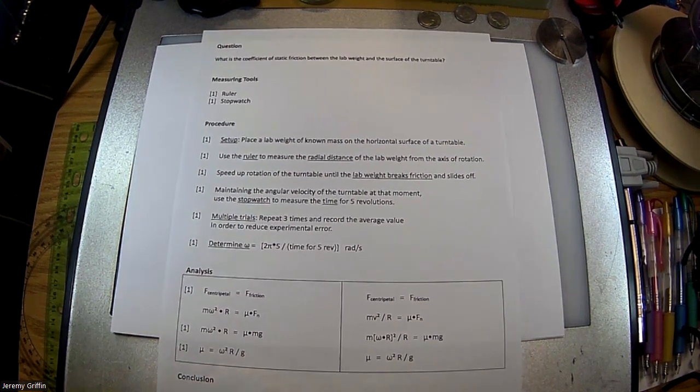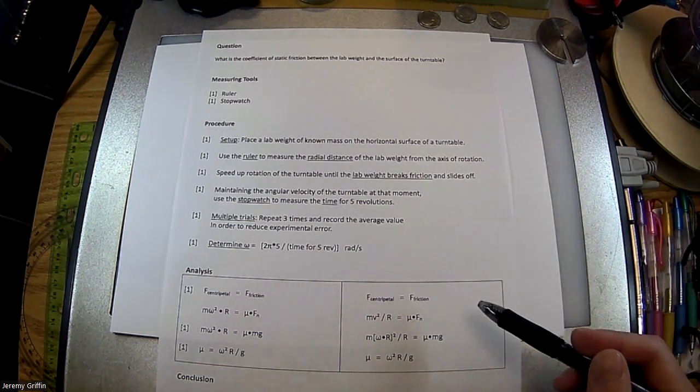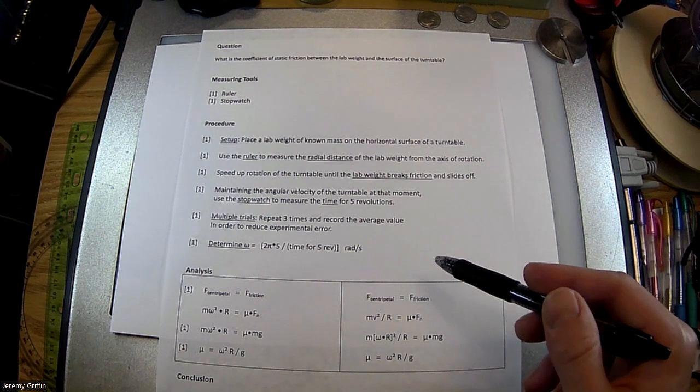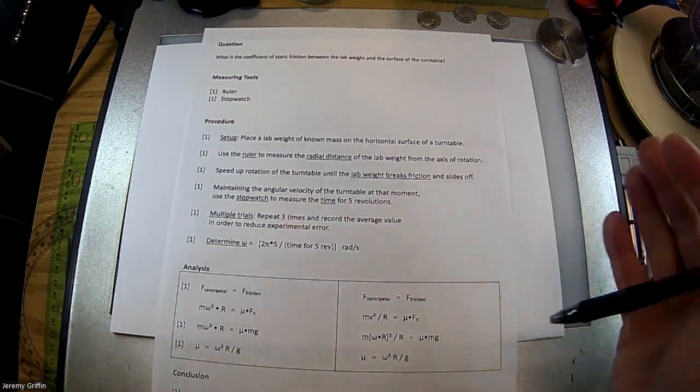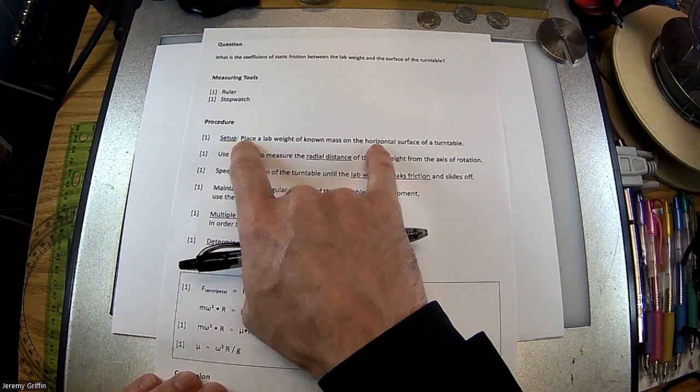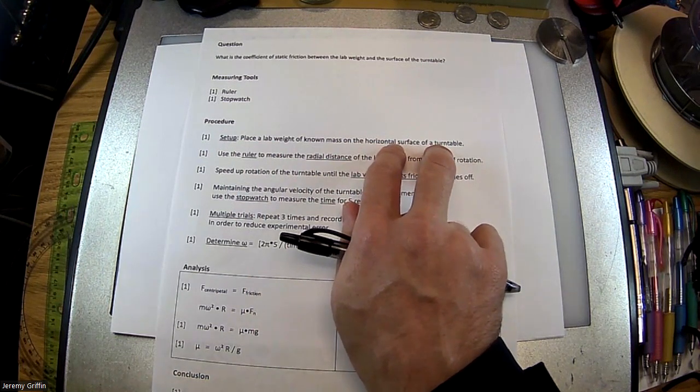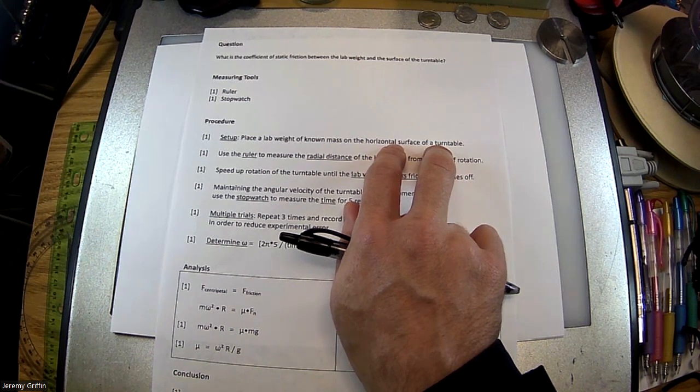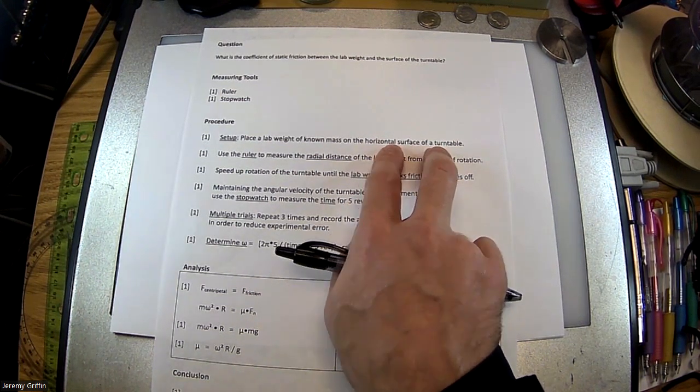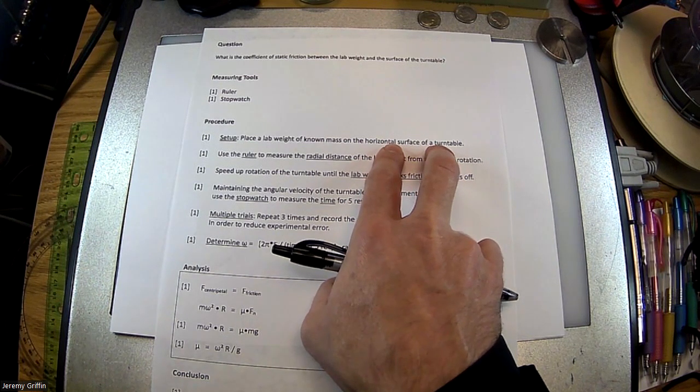All right. Procedure. So I'll tell you guys, procedure, AP is usually looking for somewhere between, like, five and seven steps. I have six steps here. Let's go one point each. Now, also, like, throughout the day, too, my other class and you guys might have slightly different procedures. So I want to touch on that, too, but here's what I came up with the other night. So one point for briefly describing a setup. Place lab weight of known mass on a horizontal surface of a turntable. Boom! There's the entire setup. So if you describe some kind of setup, or you know what? If you drew a diagram, go ahead and give yourself a point for that, too. You're allowed to draw a diagram, and if you're a good artist, I'll give it that point.